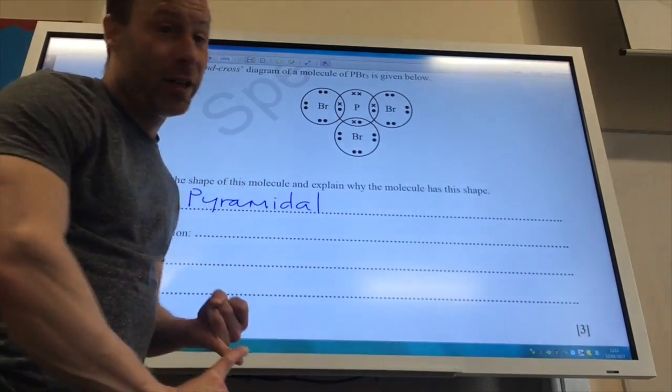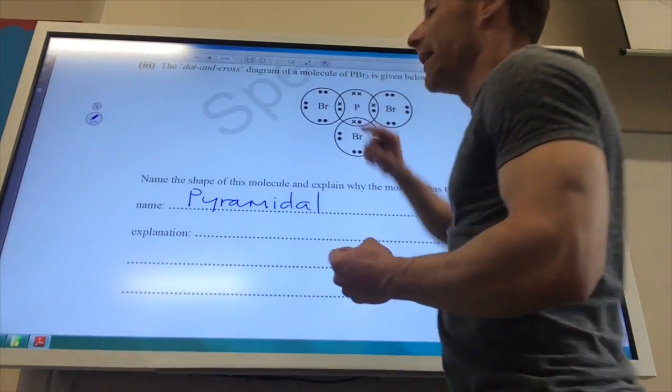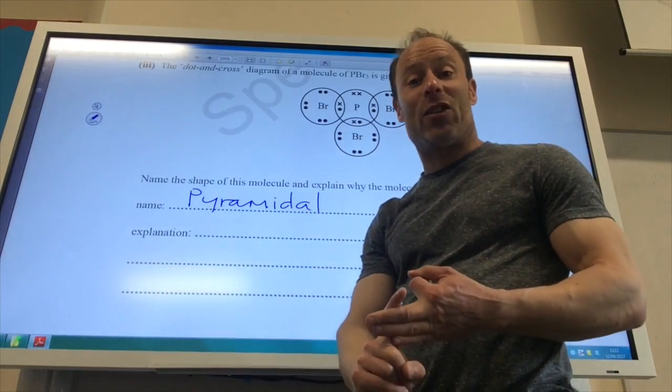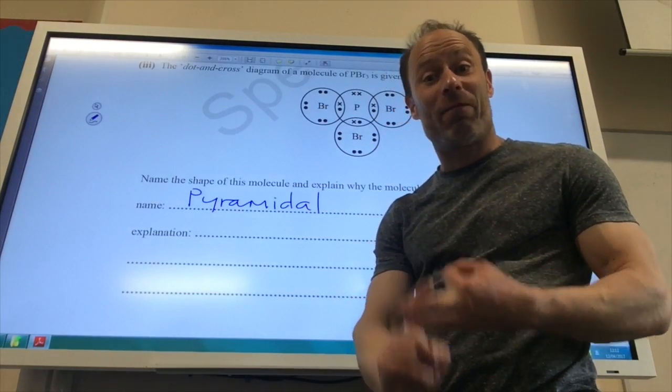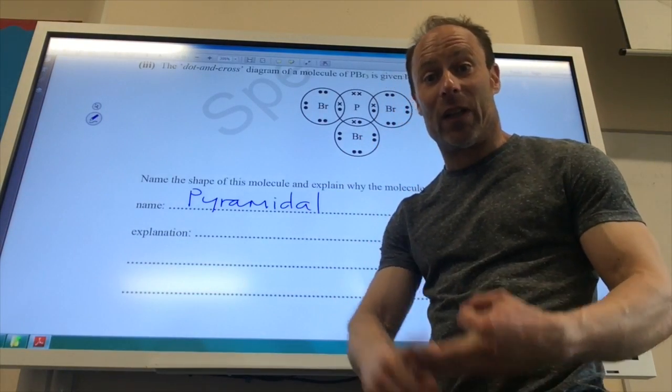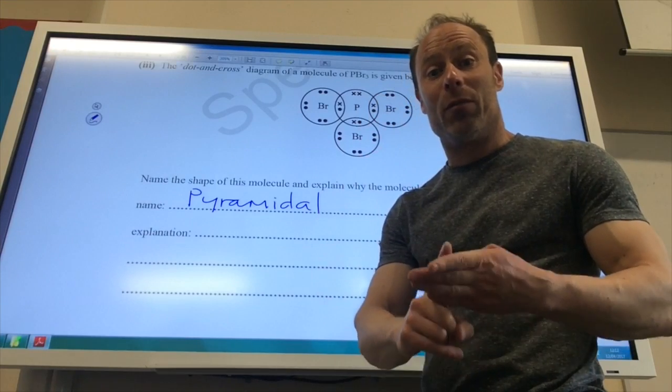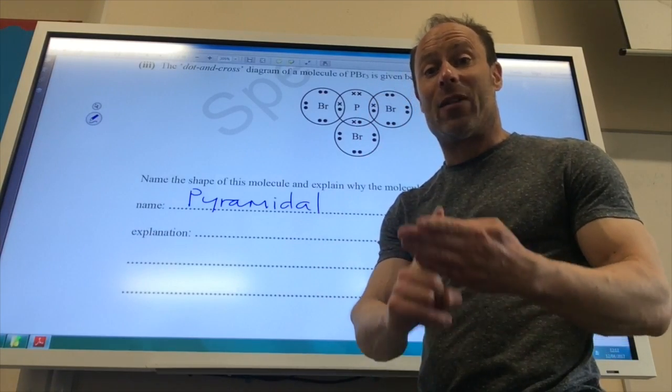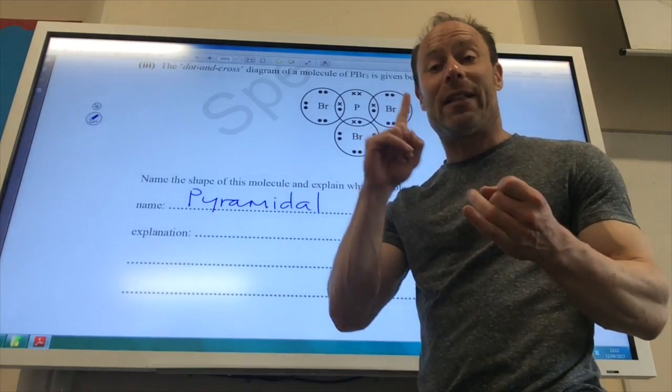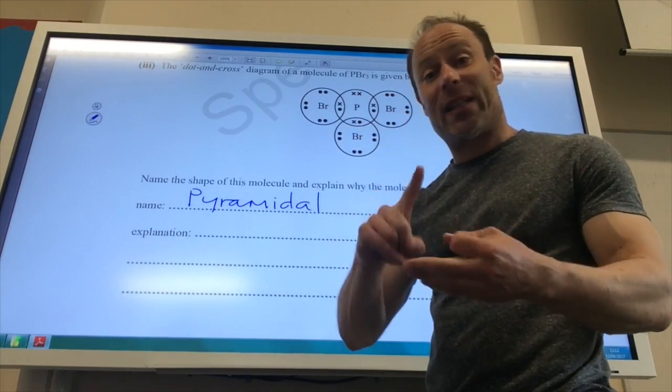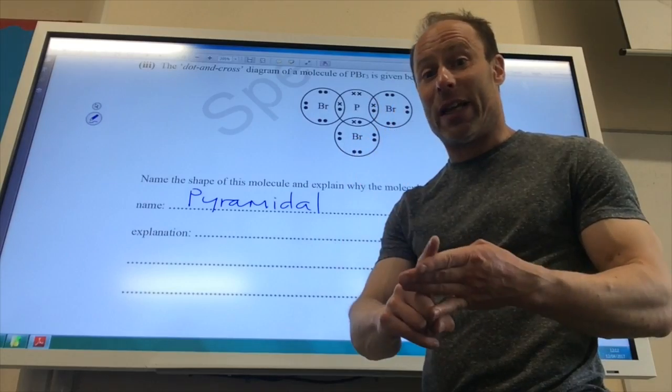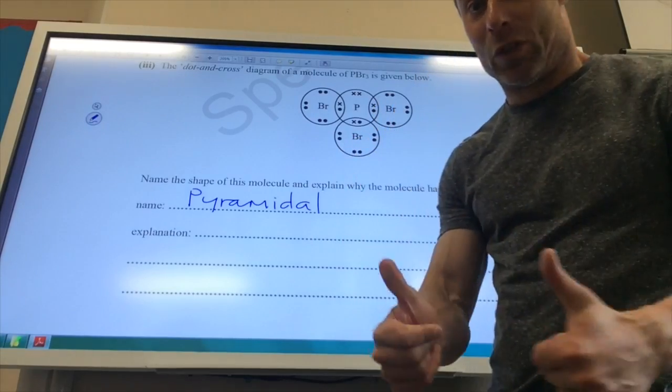Three bonding pairs. Hopefully you can see that. One, two, three. One non-bonding pair. Pairs of electrons repel to get as far away as they can from each other. Lone pairs repel more than bonding pairs. So always go through that routine. Number of bonding pairs, number of non-bonding pairs. Then always say pairs of electrons repel to get as far away as they can from each other. Lone pairs repel more than bonding pairs. It should be sorted.